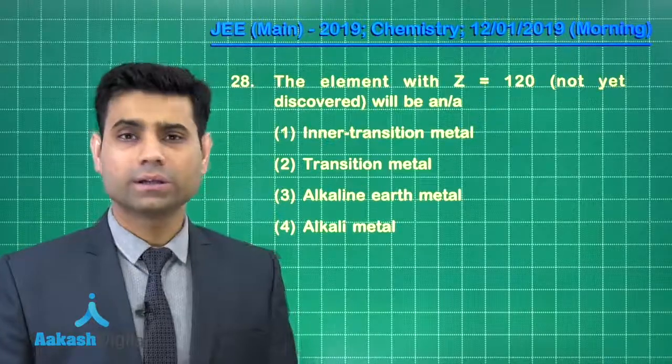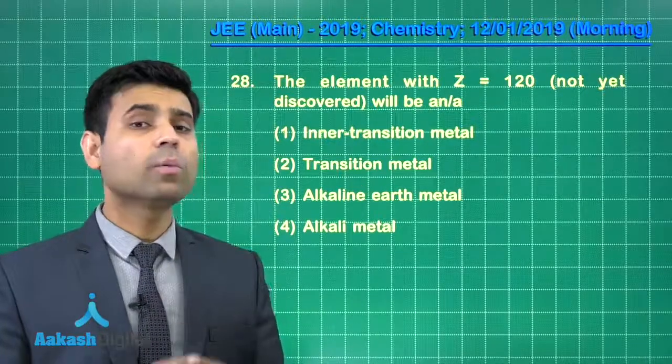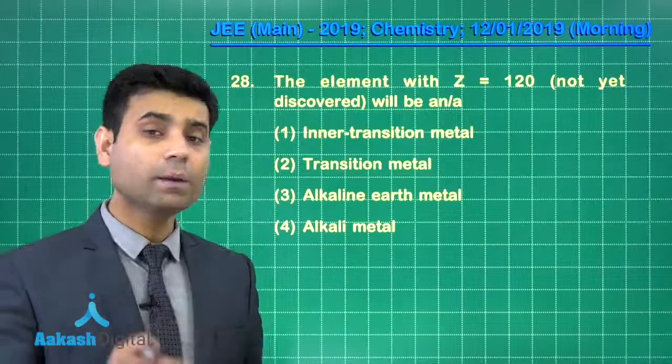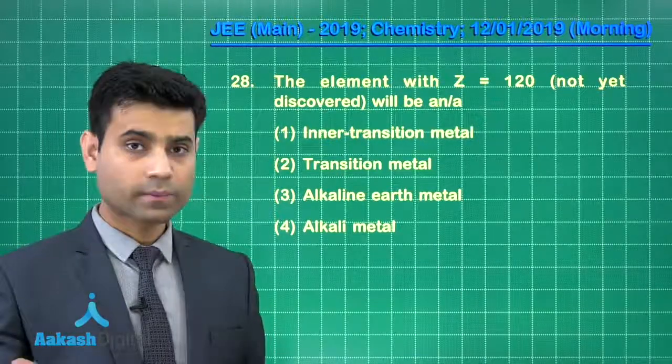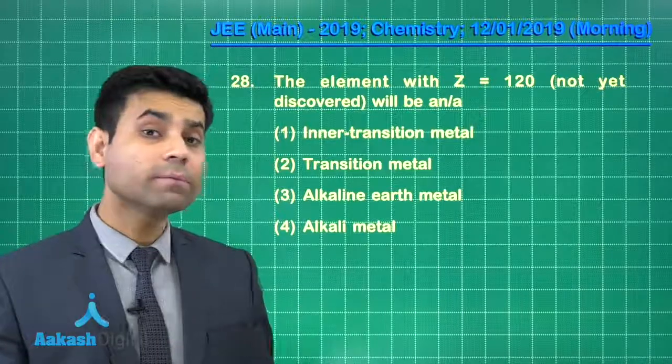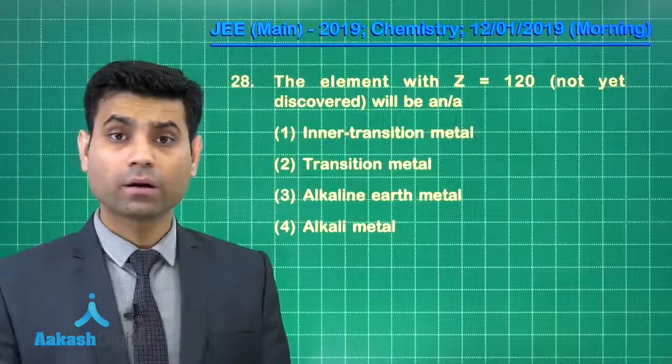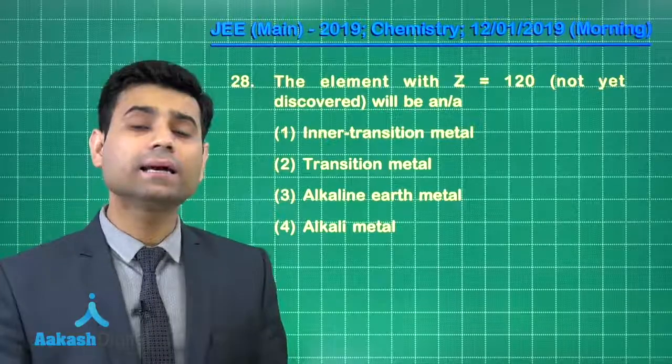This is a very simple question. Students, we know 118 elements. This 118th element will belong to 18th group. So 119th element will belong to group 1 and 120th element will belong to group 2. Group 2 is an alkaline earth metal.